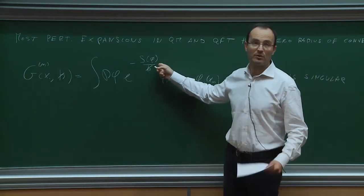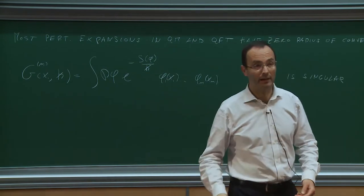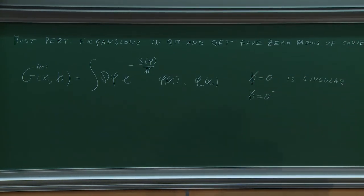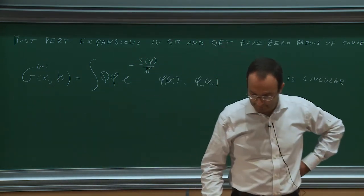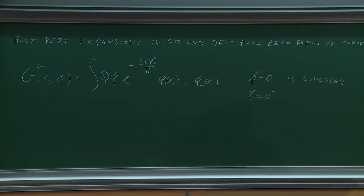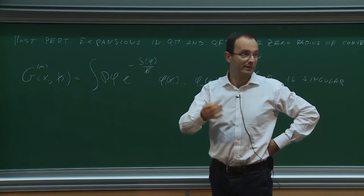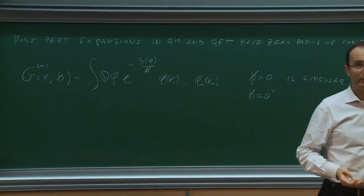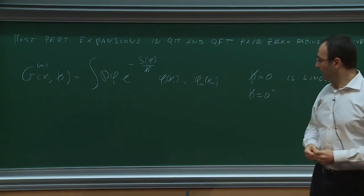Assuming the action is positive definite, configurations are well-defined for ħ>0 but clearly ill-defined for ħ<0. So you don't need deep thinking to see that ħ=0 cannot be analytic as an exact function. This also holds for the coupling constant expansion, which is related to loop-wise expansion — particularly true for simple theories like φ⁴. The point g=0 is a non-analytic point, so perturbation theory gives an asymptotic series, not a convergent one.